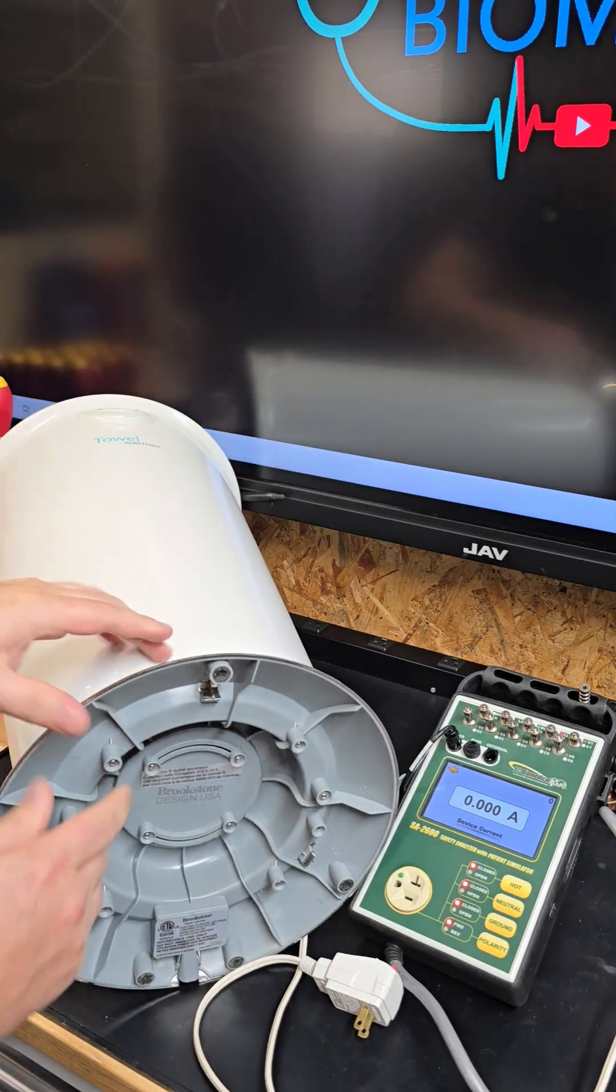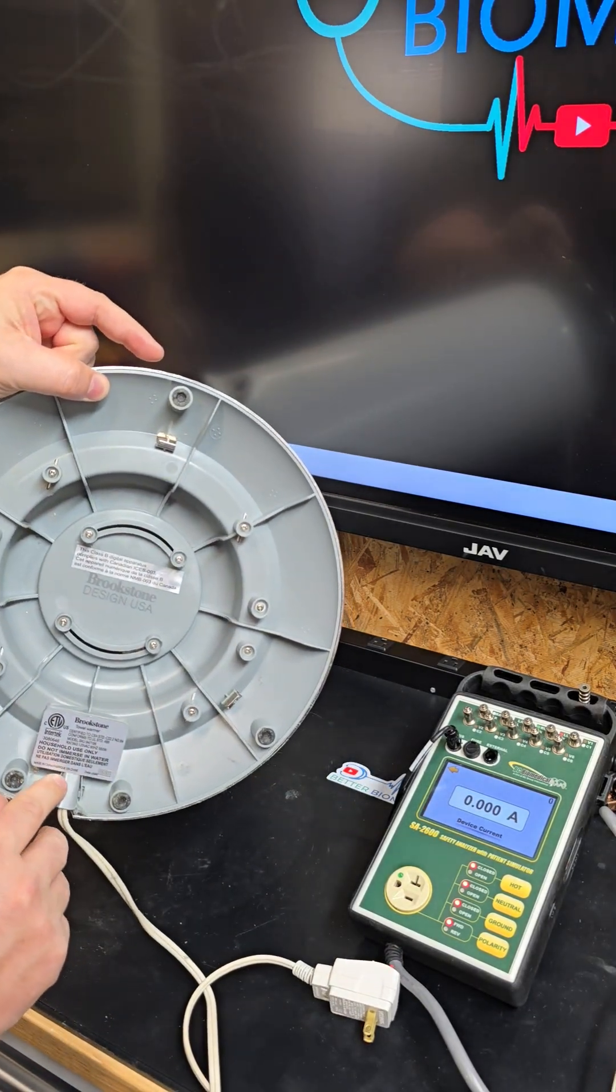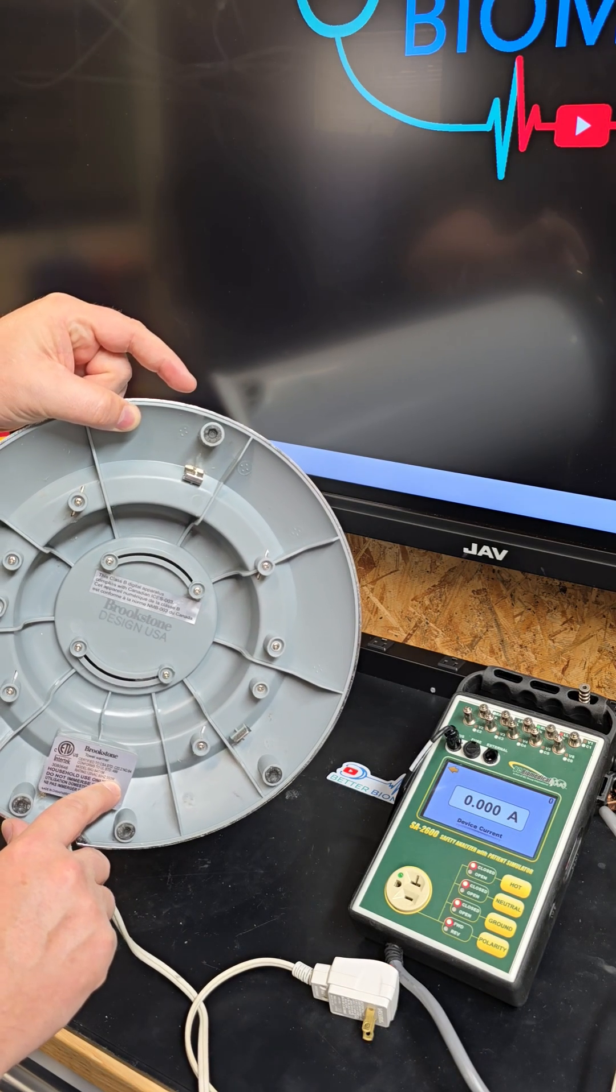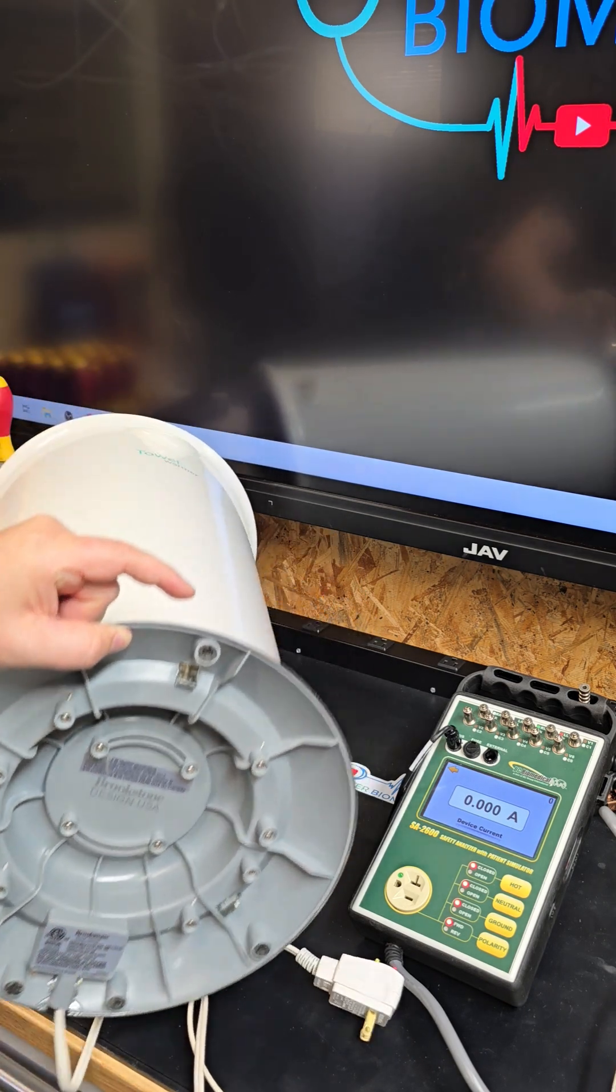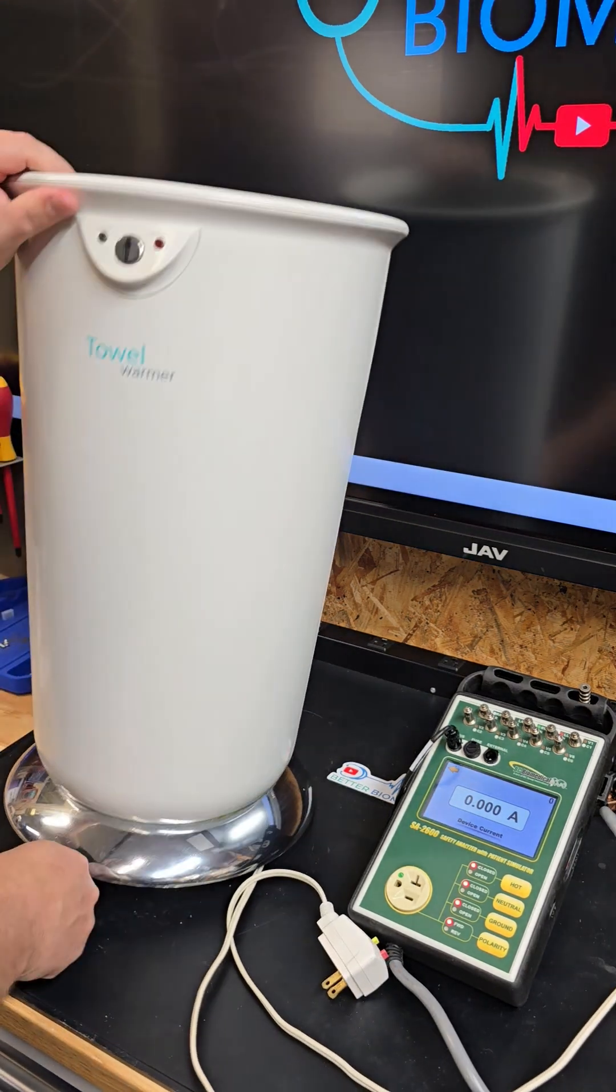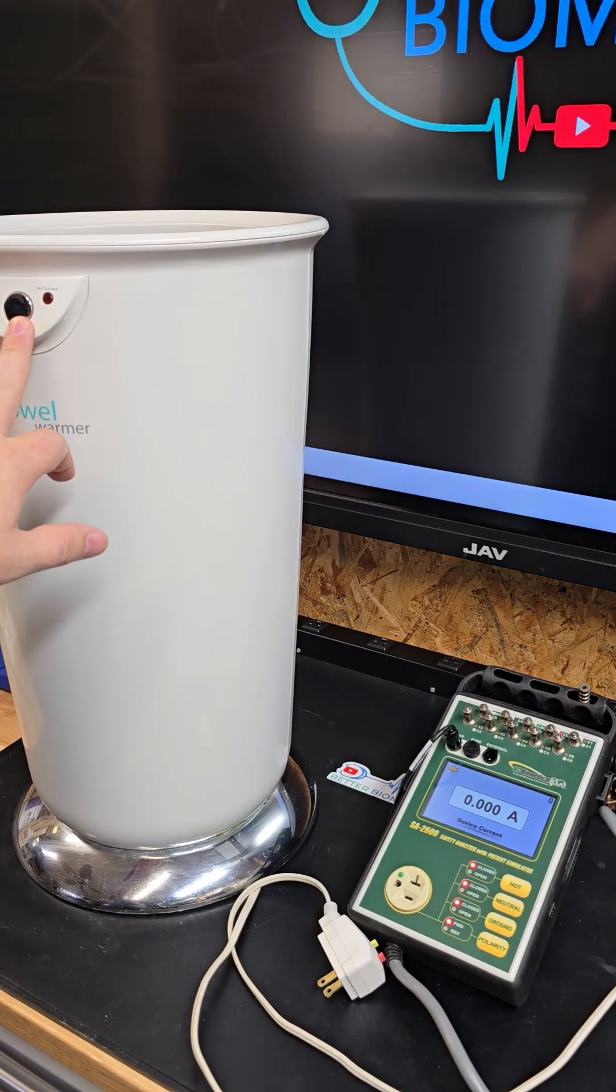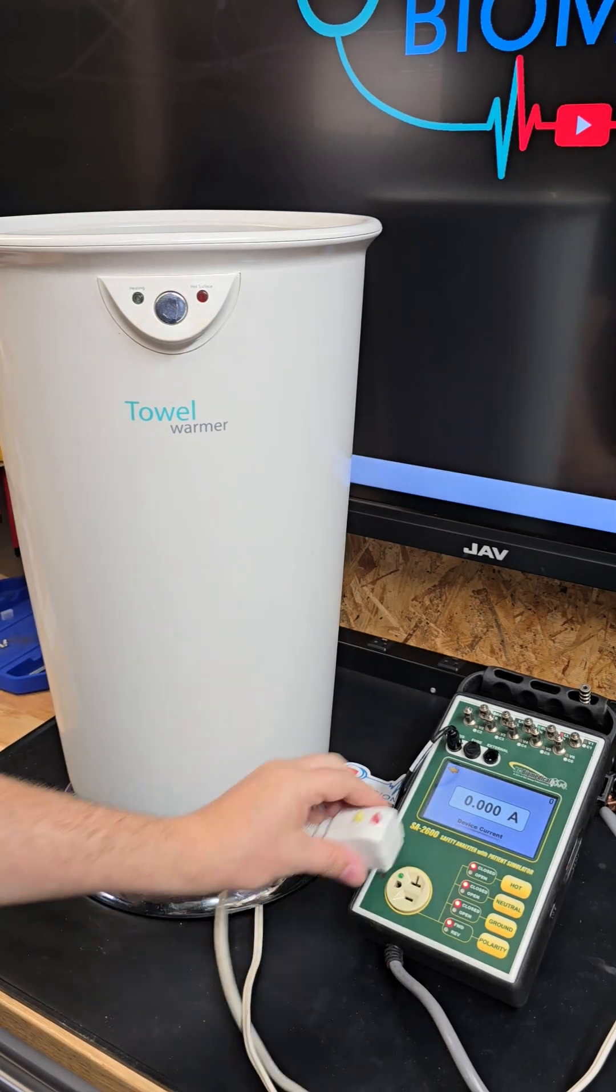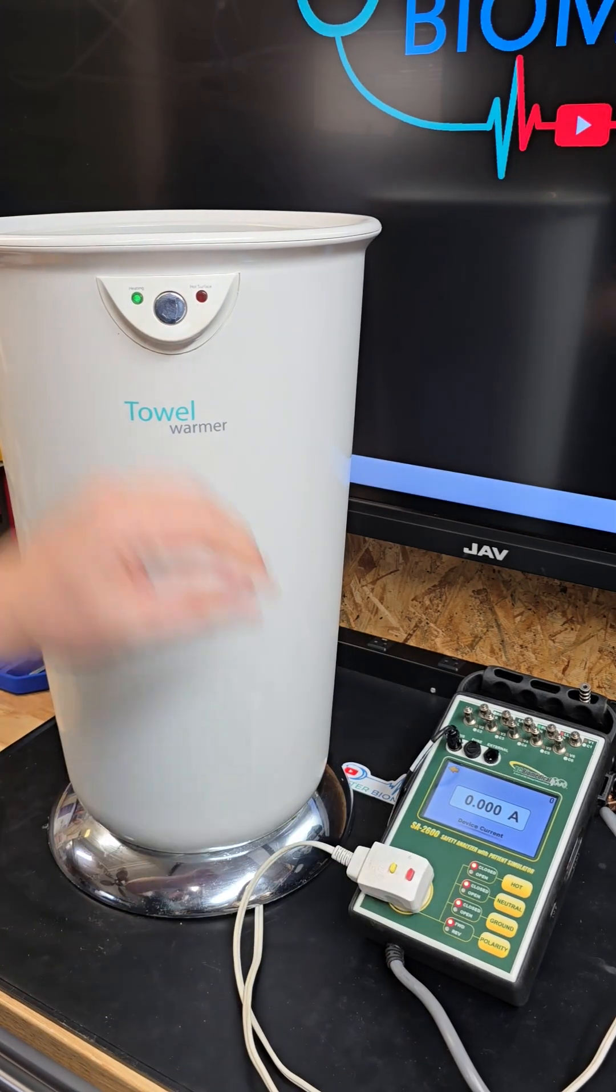If you look down here at the bottom on the certification label, it says we should be pulling about 550 watts. That's about 6 amps. By plugging it in, it shows it's turned on and should be in heating mode, but it's not pulling any current whatsoever. That shows we have bigger problems.